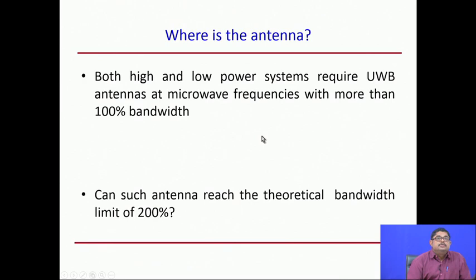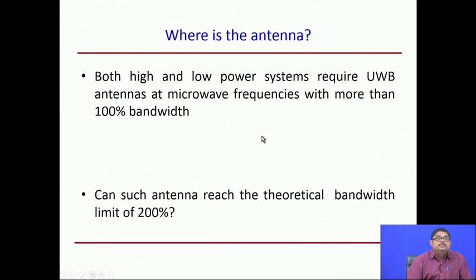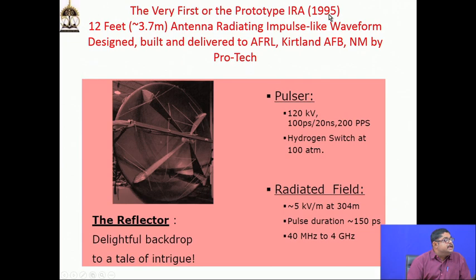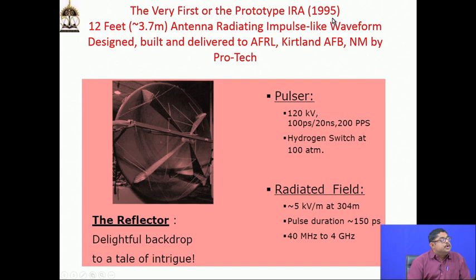The first high power UWB antenna was developed in 1995 by Carl Baum, D. V. Giri, and Everett Farr at the Air Force Research Laboratory, Kirtland AFB, New Mexico, with ProTech supplying it. The research took almost 20 years, and these three persons received the John Kraus award for this antenna development. This was the first time a nanosecond-type pulse was shown to be transmitted non-dispersively. This antenna is called the Impulse Radiating Antenna (IRA).